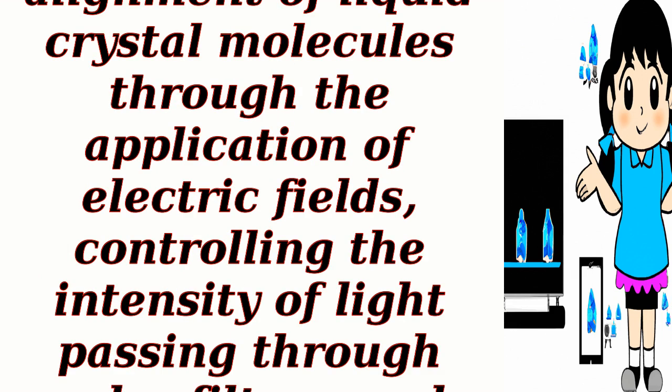Overall, LCDs create images by manipulating the alignment of liquid crystal molecules through the application of electric fields, controlling the intensity of light passing through color filters, and selectively activating pixels using thin-film transistors.